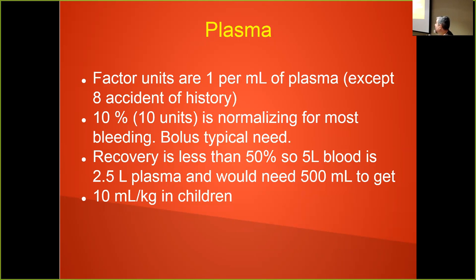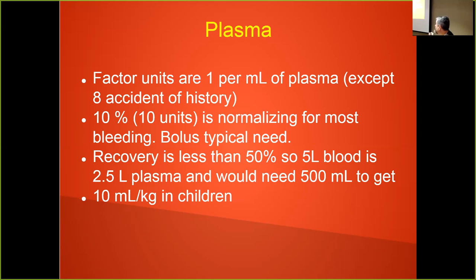The reason you transfuse plasma is for coagulation factors. One unit per ml is 1% activity — except for Factor VIII which is 2 units for one, an accident of history. To stop bleeding, you don't need 100% — just 10%. If you give 10% of their plasma volume, it should be okay. Since plasma is probably only 50% of factors involved, you'll need around 500–600 ml to stop someone from bleeding. In children, about 10 ml per kg; for adults, you're probably going to need to give two units, then check coagulation parameters.